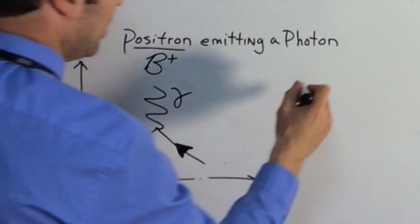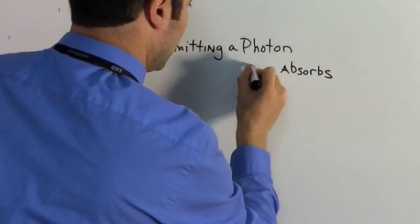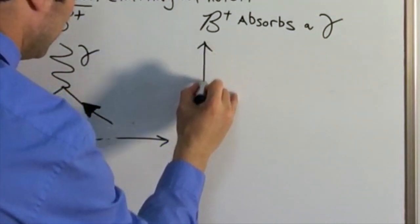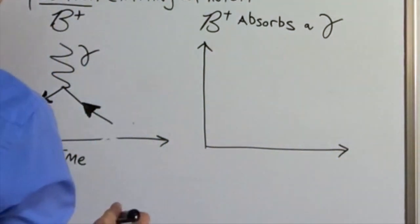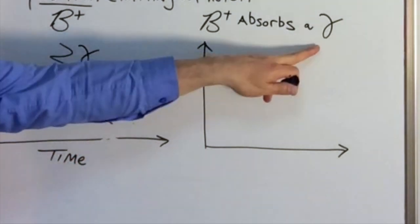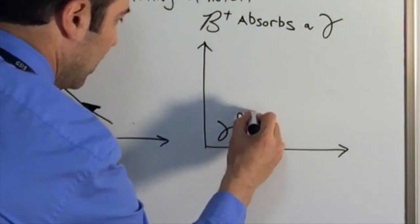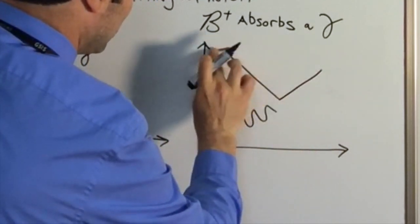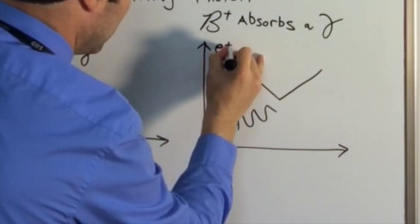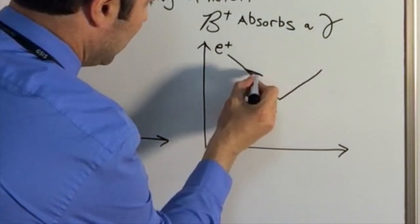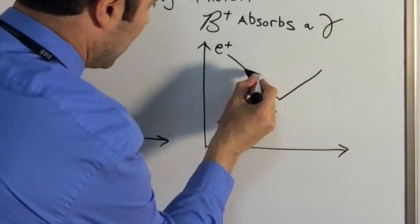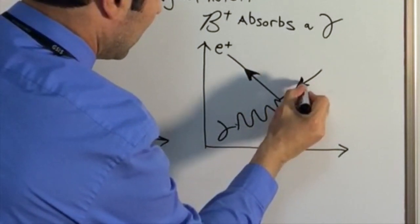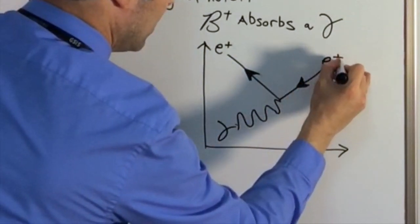Similarly, we could say a positron absorbs a photon. We could have our positron catching a photon — the first thing is to have the photon coming in. If the photon is coming in this direction, then our positron comes in, catches it, and changes direction. Because it's a positron, E+, it's an antiparticle traveling backwards in time. Once it catches that photon, it changes direction, and we'll have an E+ on this side as well.